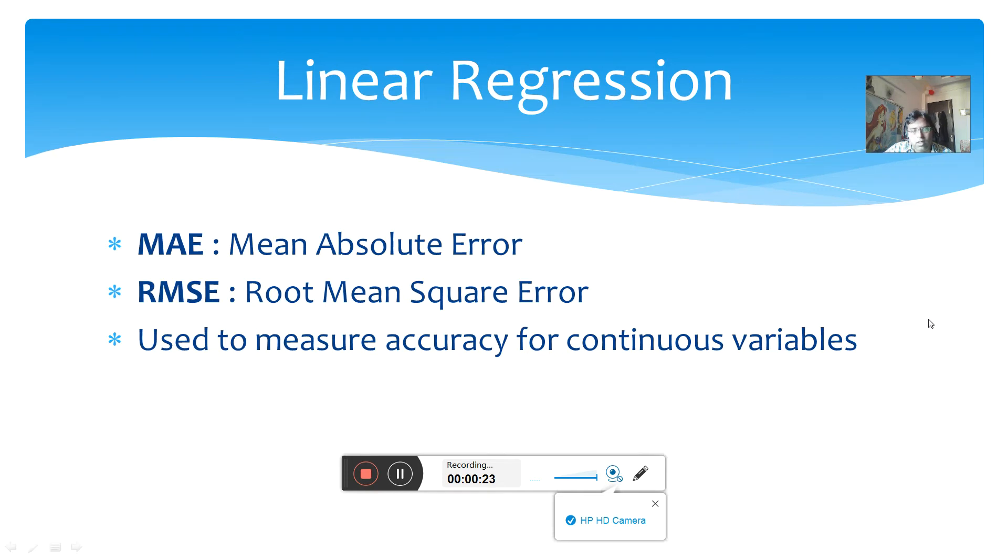When we talk about building any model on linear regression, we talk about two terms to check the accuracy of the model. We talk about MAE and RMSE. MAE stands for Mean Absolute Error and RMSE stands for Root Mean Square Error. Both of these terms are used to measure the accuracy for continuous variables.